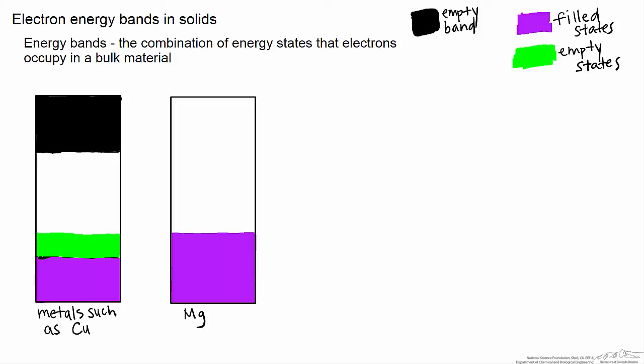and thus magnesium is a slightly less good conductor of electricity than copper is. Again, to reiterate, unlike copper, magnesium doesn't have an unfilled state. It has an adjacent empty band,